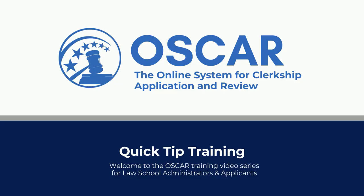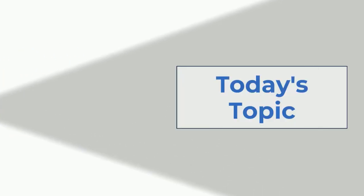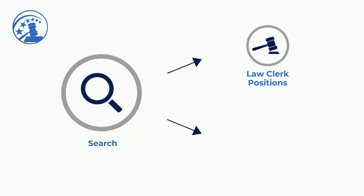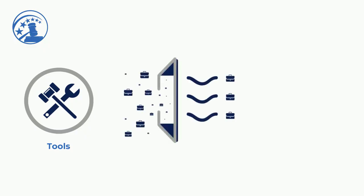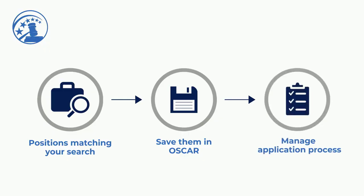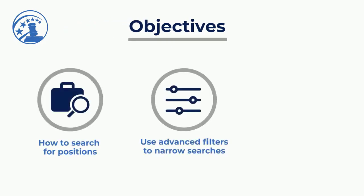Welcome to the OSCAR training video series for law school administrators and applicants. This video will walk you through how to search and save positions in OSCAR. OSCAR allows you to search for both law clerk and appellate staff attorney positions, with tools for narrowing the field to positions that fit your goals and interests. Once you have found positions that match your search, you can save them to better organize and manage your application process. This video will cover how to search for positions, use advanced filters to narrow your search, and save your searches.